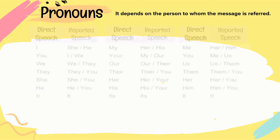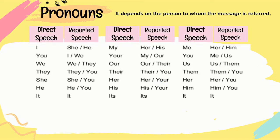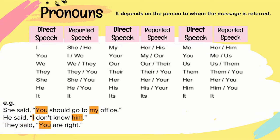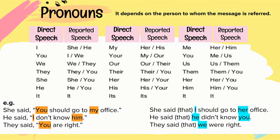First, pronouns — it depends on the person to whom the message is referred. Looking at the table of direct speech and reported speech: she said 'You should go to my office' becomes she said that I should go to her office. He said 'I don't know him' becomes he said that he didn't know you. They said 'You are right' becomes they said that we were right.